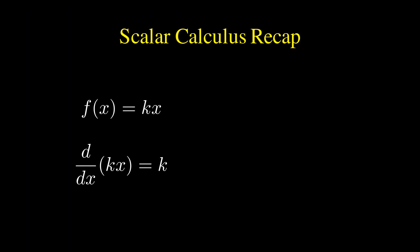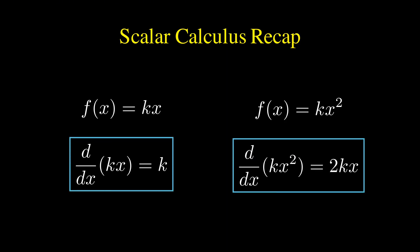Let's start by recalling some familiar scalar calculus. If we take the derivative with respect to x of the function k times x, where k is a constant, we simply get k. Similarly, if we differentiate k times x squared, we get 2k times x. These are fundamental results that have elegant analogues in matrix calculus, which we'll see shortly.